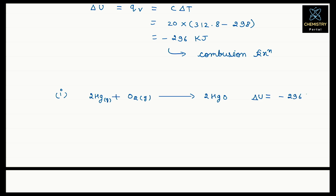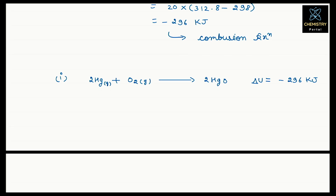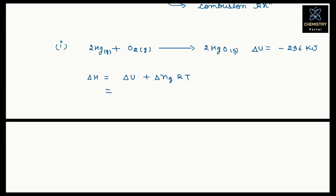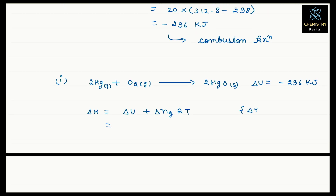For this reaction, ΔU = −296 kilojoule. Now to find ΔH, we use: ΔH = ΔU + Δng·RT, where Δng is gaseous moles of products minus gaseous moles of reactants. In the products, HgO is solid, so gaseous moles = 0. In reactants, we have 2 moles Hg(g) + 1 mole O₂(g) = 3 moles. So Δng = 0 − 3 = −3.